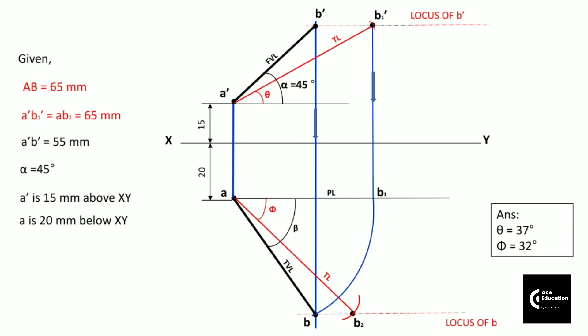So once you complete this diagram, measure the angles theta and phi which was asked in the question. So guys, this is one of the problems on projection of lines which involves the FV of the line and its true length. With the help of which we are supposed to draw the other projection of the line and get the inclinations with respect to HP and VP.